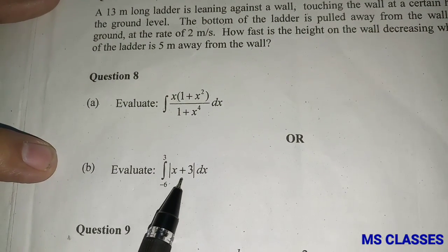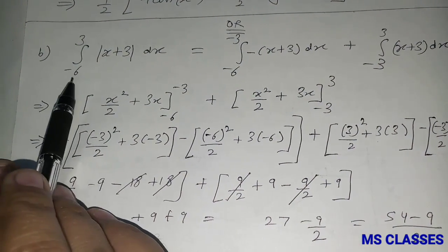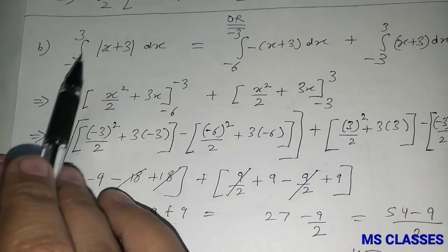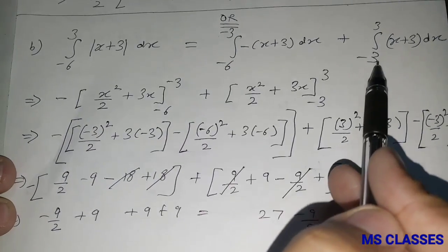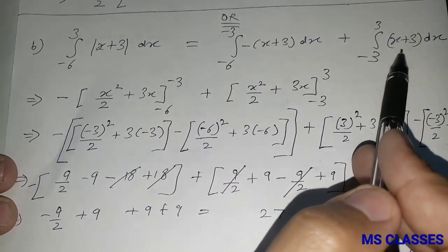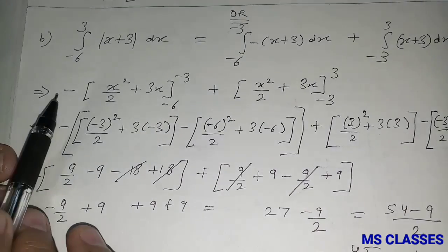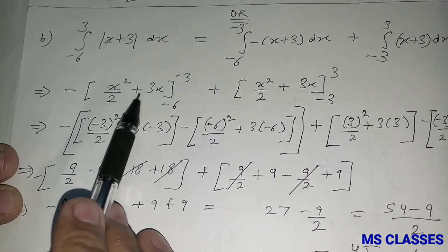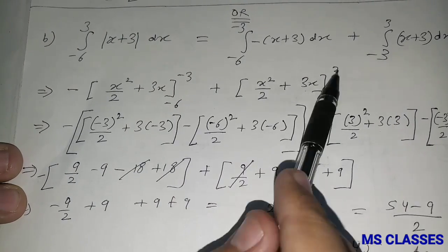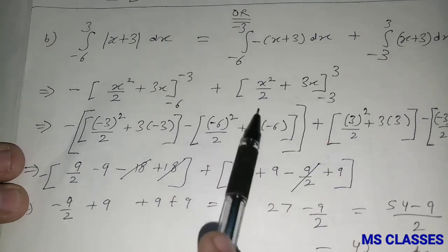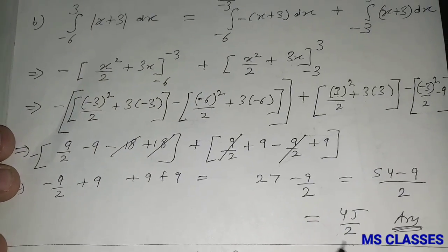Evaluate ∫₋₆³ |x + 3| dx. The function x + 3 is negative from -6 to -3, so we write -(x + 3) there, and positive from -3 to 3, so we write (x + 3) there. Integrating each part with the respective limits and substituting the boundary values, we get 45/2 as the answer.